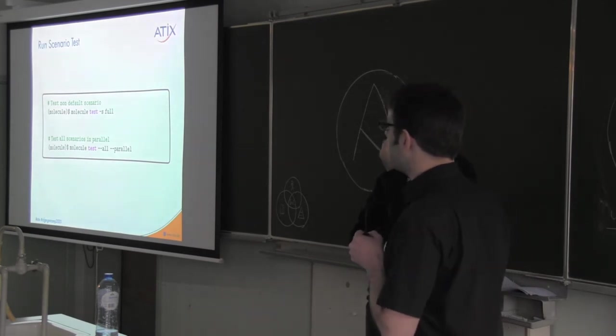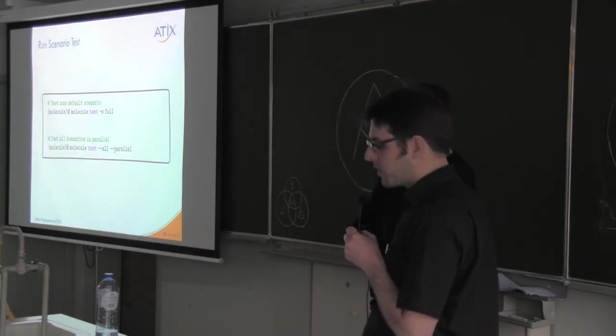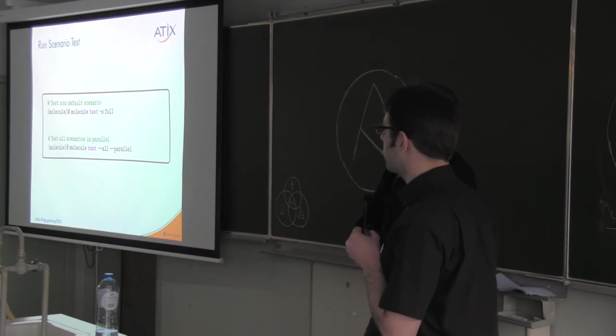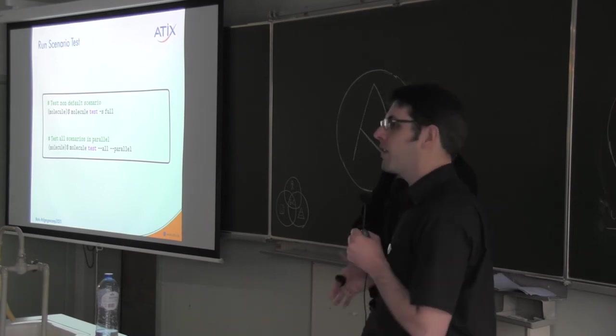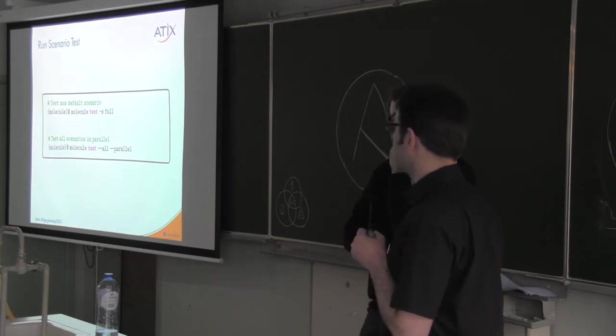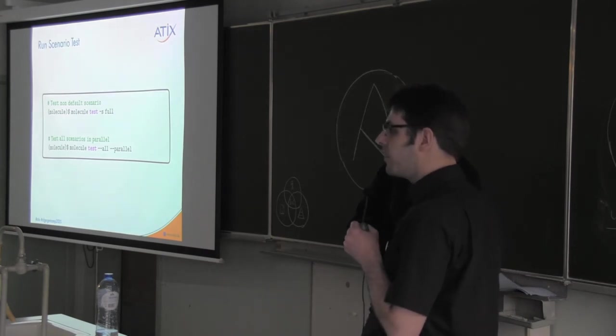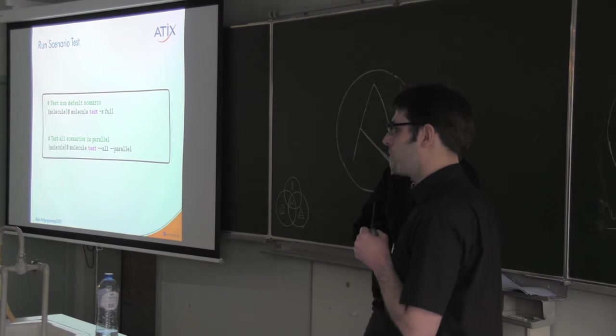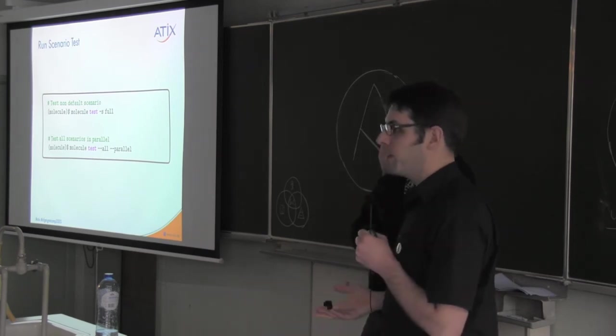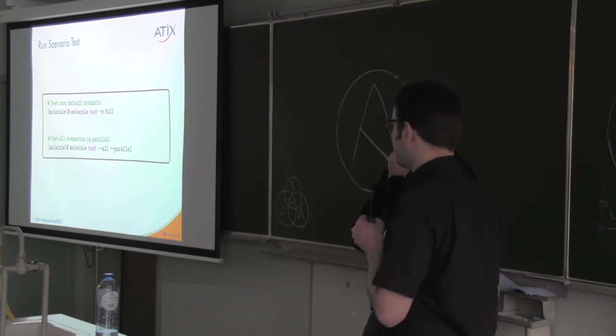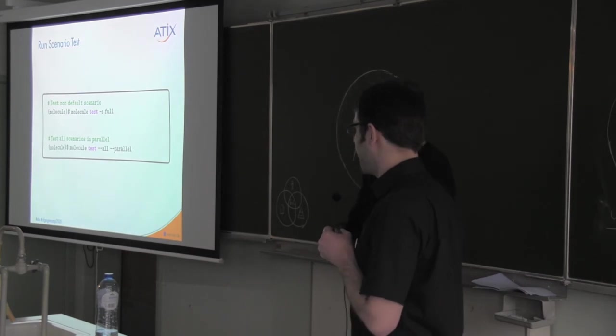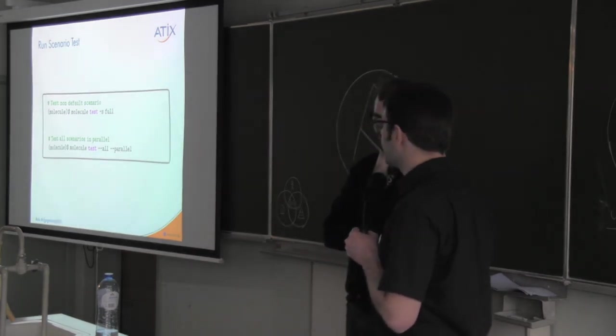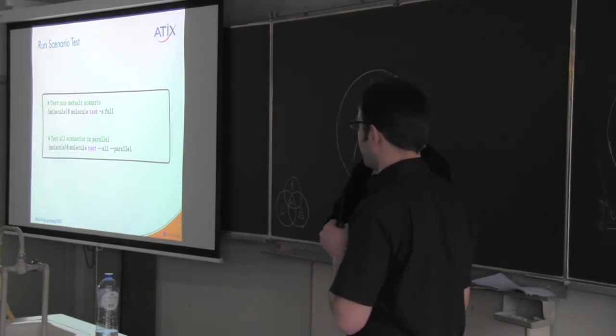And, now, how do I run the scenario? I can just do a molecule test with minus s and the name of the scenario. Then, it runs the molecule test for that one scenario. And, remember, it's the whole matrix from destroying the old boxes, creating new boxes, preparing them, converging, idempotence checking them, and, after all, verifying them. Now, if I want to, if I change something in my role, and I want to verify that it's still working in all scenarios, I should test all scenarios, and we can do that with one command, which is molecule test all. And, if you're brave enough, you can do that in parallel. And, this is pretty much the command you want to use in your CI, I believe.